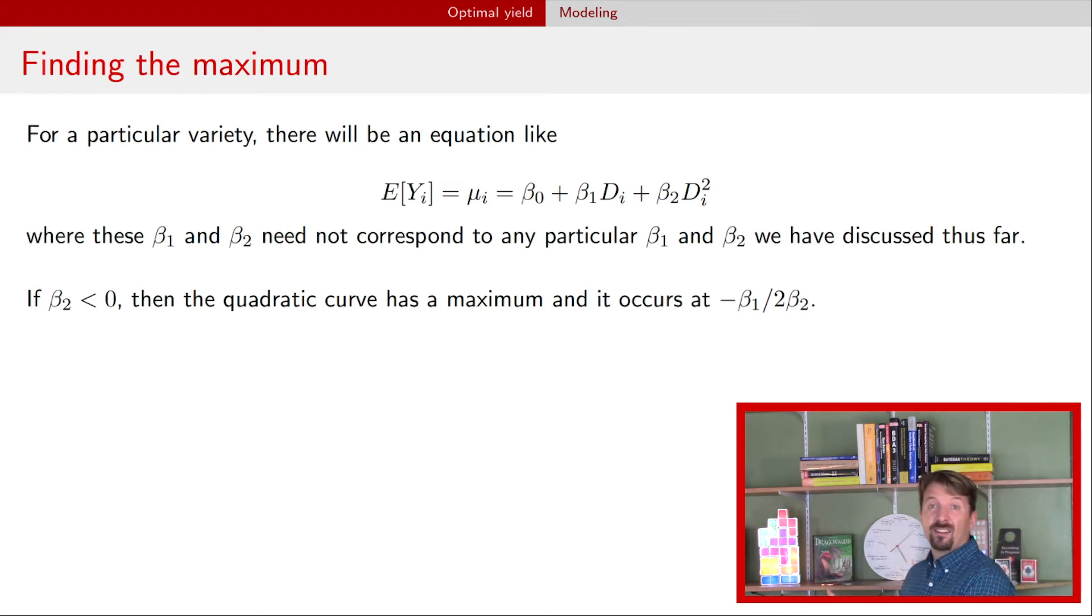Finding uncertainty here is a little bit more complex. My suggestion if you want to go that route is that you conduct a Bayesian analysis. You get the joint posterior for β₁ and β₂, you take samples from that joint posterior, calculate this quantity negative β₁ divided by 2β₂, and then you can calculate that for a bunch of samples and you can get both point estimates and credible intervals.